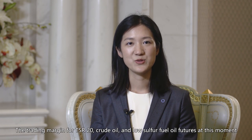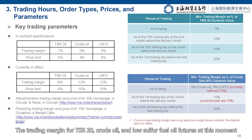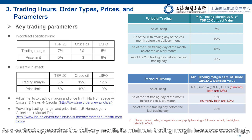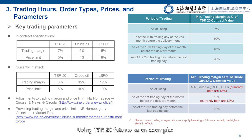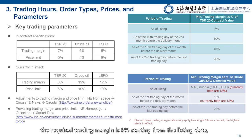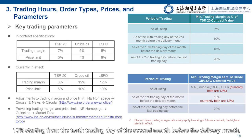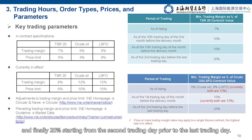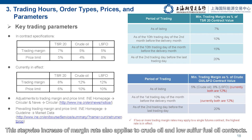The trading margin for TSR20, crude oil and low sulfur fuel oil futures is currently 8%, 12%, and 12% of the contract value respectively. The price limit is 6%, 10%, and 10%. As the contract approaches the delivery month, its minimum trading margin increases accordingly. Using TSR20 futures as an example, the required trading margin is 8% starting from the listing date, 10% starting from the 10th trading day of the second month before the delivery month, and finally 20% starting from the second trading day prior to the last trading day. This stepwise increase of margin rate also applies to crude oil and low sulfur fuel oil contracts.